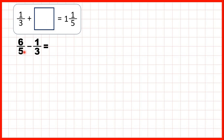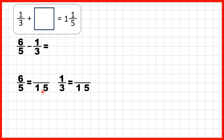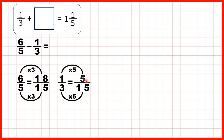Now to subtract fractions, we need our denominators to be the same. The lowest common multiple of 5 and 3 is 15. So we can change 6/5 and 1/3 into fractions which have a denominator of 15. 5 times 3 is 15, and 6 times 3 is 18. 3 times 5 is 15, and 1 times 5 is 5. So instead of 6/5 we can write 18/15, and instead of subtracting 1/3, we can subtract 5/15.